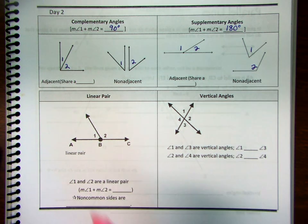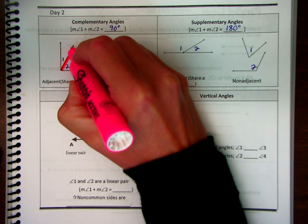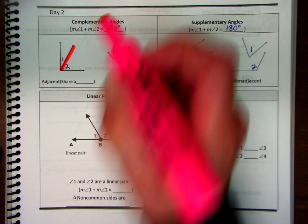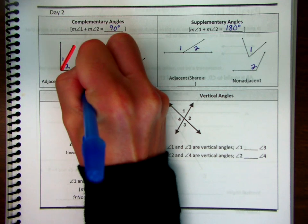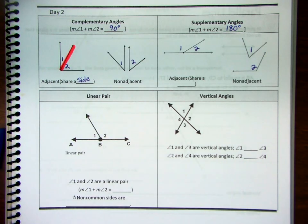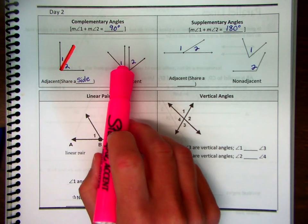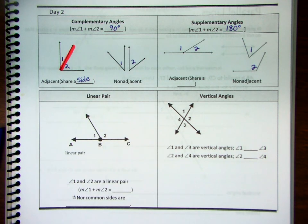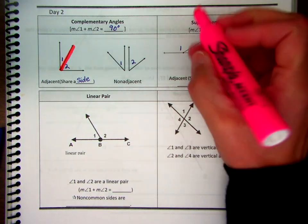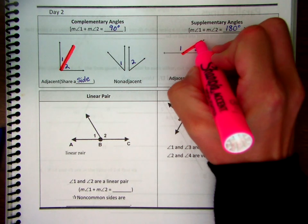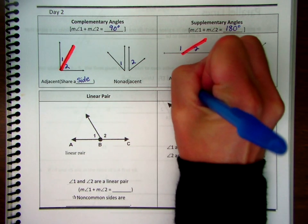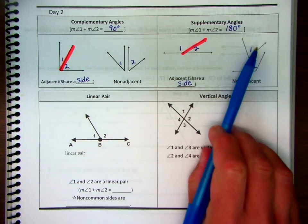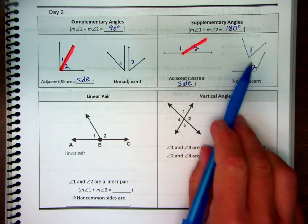When we talk about adjacent versus non-adjacent: adjacent angles share a common side, as you can see in this picture with angles one and two. For non-adjacent angles, you can see they don't intersect or share a side at all. In the supplementary angles box, angles one and two share that common side, while for a ray these two angles do not share a common side.